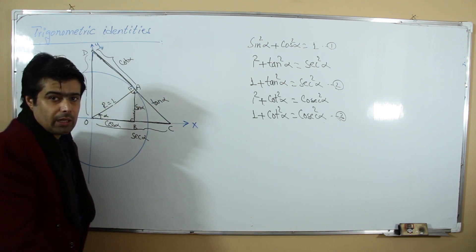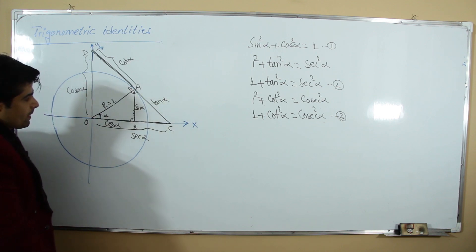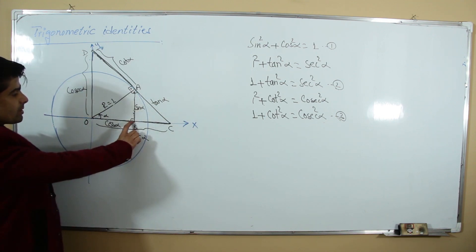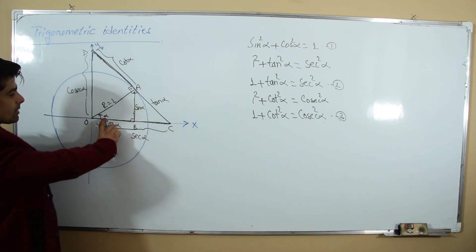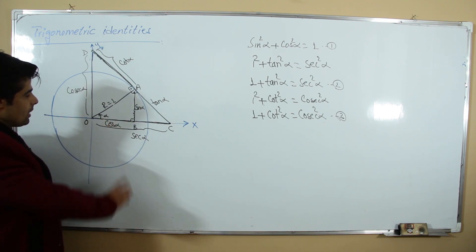The triangles OAB and OAC are the same triangles. In OAB we have 90° and angle alpha; in OAC we also have 90° and angle alpha — two angles are the same.